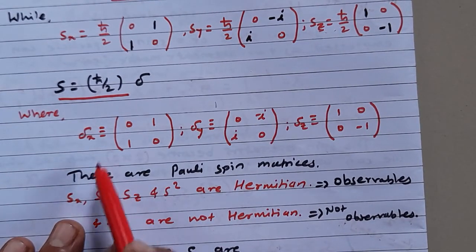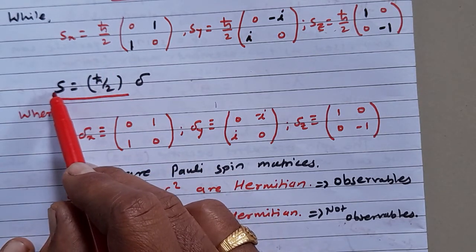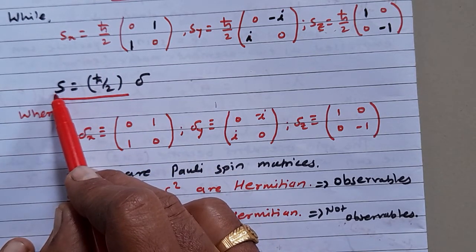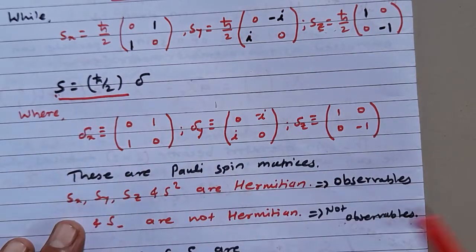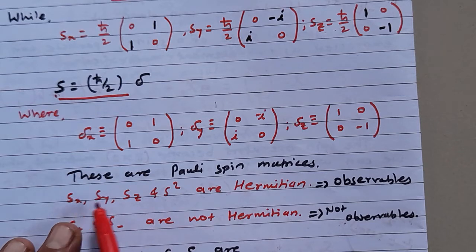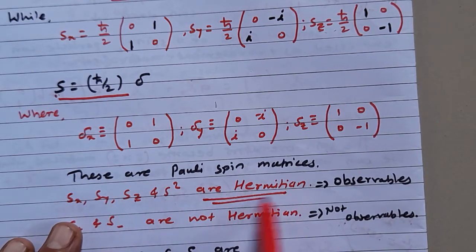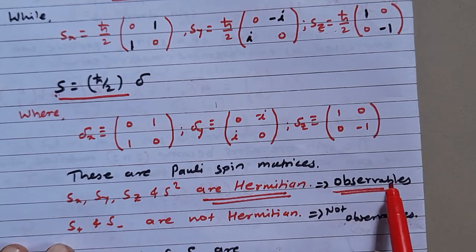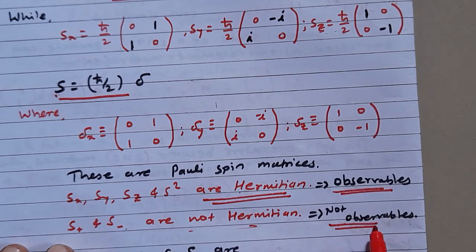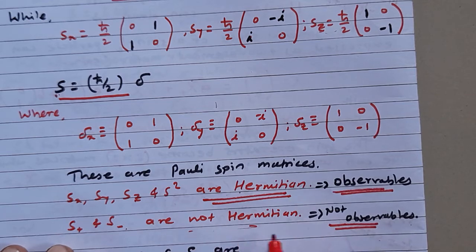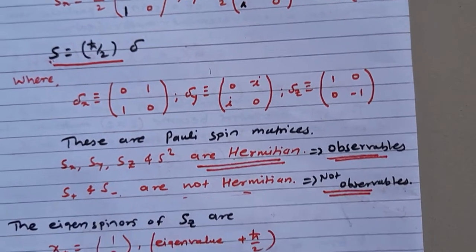Since the spin angular momentum S is an operator, Sx, Sy, Sz, and S² are all Hermitian, and that is why they are observables. S+ and S- are not observables because they are not Hermitian.